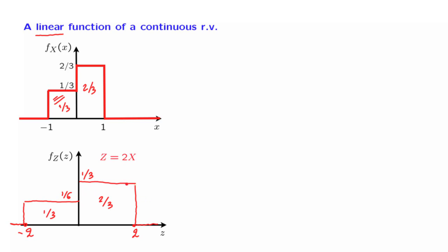So what happened here? We started with a PDF of x and essentially stretched it out by a factor of 2 while keeping the same shape. However, we also scaled it down by a corresponding amount — 2 thirds became 1 third, and 1 third became 1 sixth. The reason for this scaling down is that we need the total probability, the total area under this PDF, to be equal to 1.